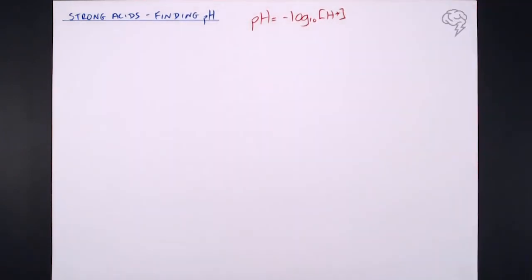In any of these questions, what we're looking to find is the hydrogen ion concentration — that's what we're aiming for. If we can't find that, we can't find the pH. But there are a simple number of steps we can follow based on the question to find this hydrogen ion concentration.